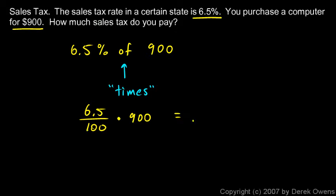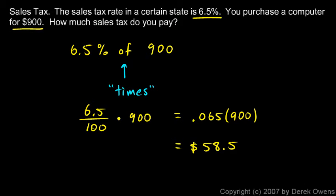The 6.5 hundredths could be written as 0.065. So it's 0.065 times 900, and that comes out to 58.5 — that's $58.50. That's the tax you would pay on a $900 purchase if you were paying a 6.5% sales tax rate.